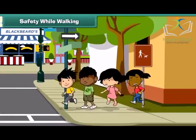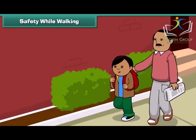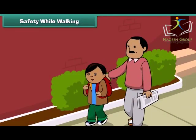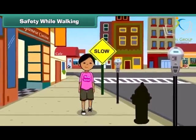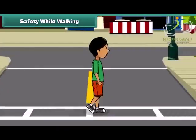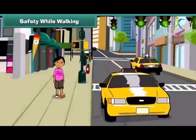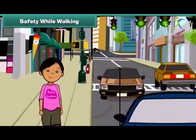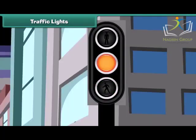Walking on the road is fun if we follow some simple rules. You should always go out with your parents and hold their hand tightly. Walk on the footpath and do not run on roads. Always prefer zebra crossing while crossing the road. Keep distance from running vehicles and always follow traffic lights when on the road.